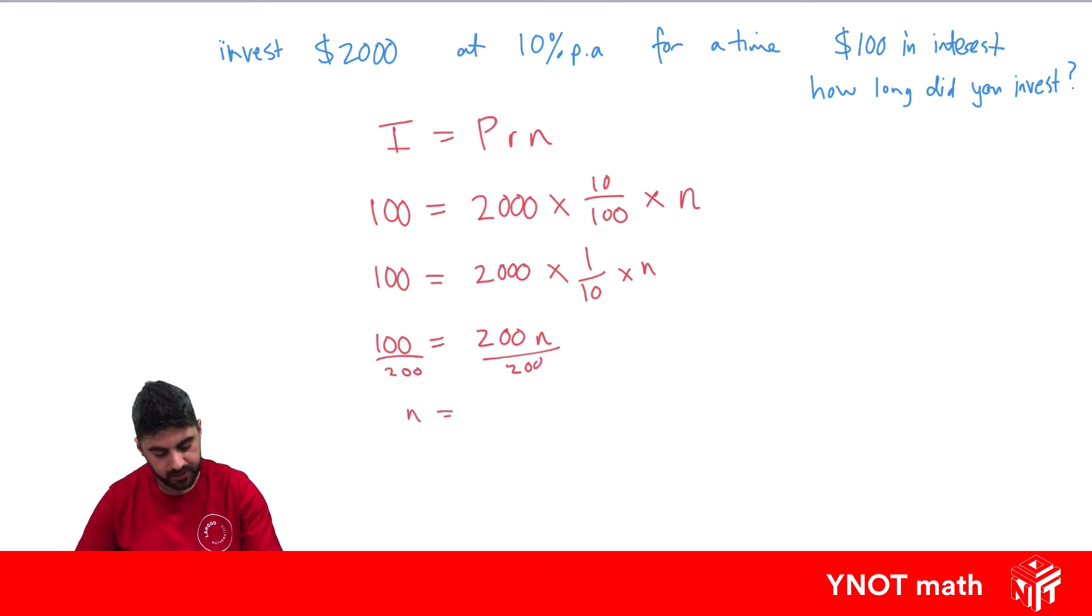So n is going to equal 0.5, and because our interest rate was in years, this gives us an answer in years, or we could say it equals six months, half a year.